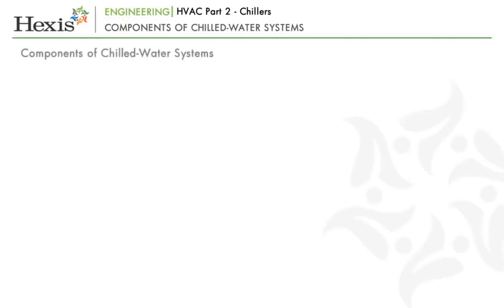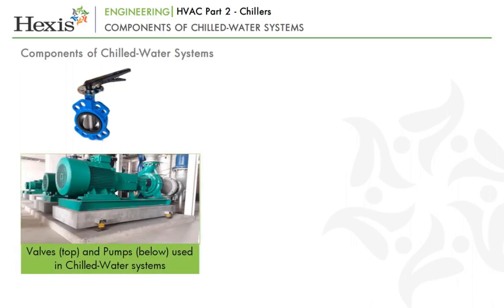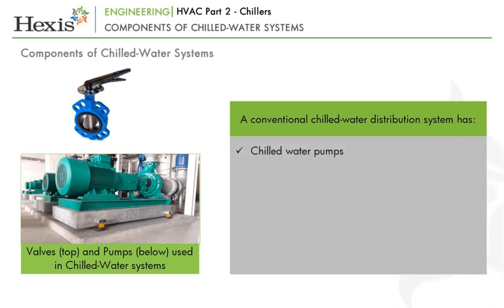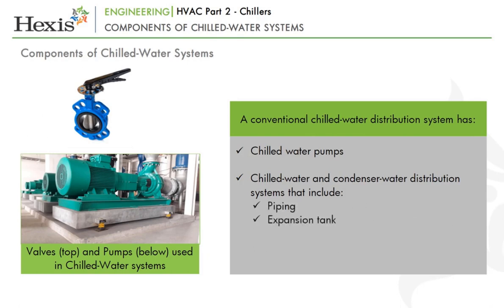Now that you have learnt about the working of chilled water systems, let's look at their components. A conventional chilled water distribution system will have: chilled water pumps; chilled water and condenser water distribution systems that include piping, cooling, an expansion tank, control valves, check valves, strainers and so forth.